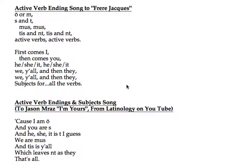S is used for the you singular. T is used for he/she/it. Mus is we — I remember that because 'we' is the same as 'us,' and of course 'mus' ends with 'us' or a U-S anyhow. T-I-S is y'all, or you plural, and N-T is they. So this tells us the endings and what subjects they go with.